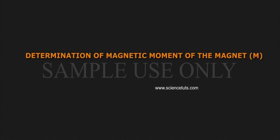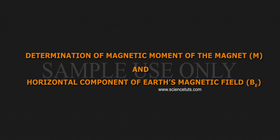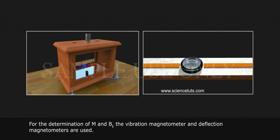Determination of magnetic moment of the magnet M and horizontal component of Earth's magnetic field BE. For the determination of M and BE,